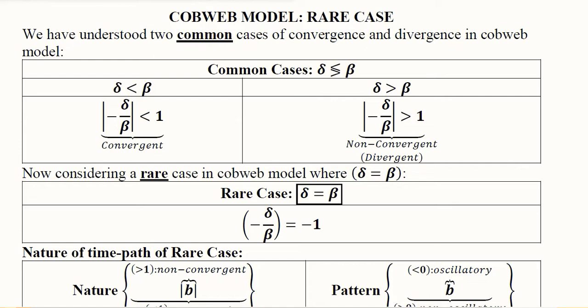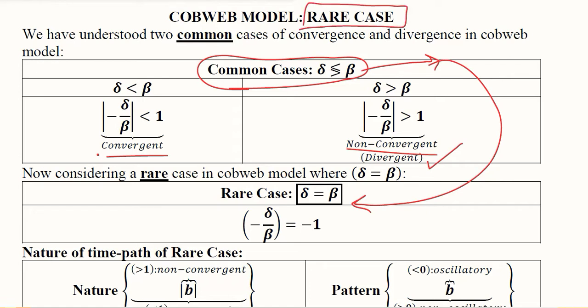After understanding the Cobweb model in its usual cases where the slope of demand curve and supply curve are not equal, we have studied the convergent case and the divergent case. But there are other rare possibilities when the slopes are equal. This is definitely very rare, it can happen once in a blue moon, but still it can happen, so we are considering this case as a rare case.